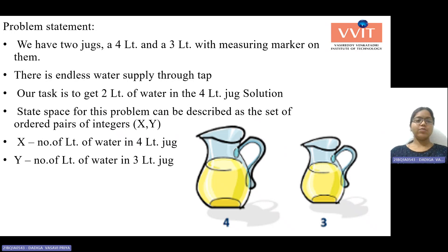Let's see what our problem is regarding this water jug. Here we are having two jugs, that is a 4-liter and a 3-liter jug with measuring markers on each of them. There is an endless water supply through a tap. Our task is to get 2 liters of water in the 4-liter jug.